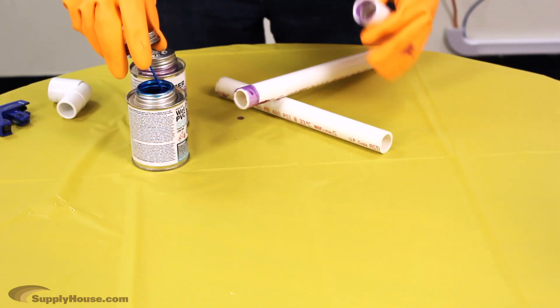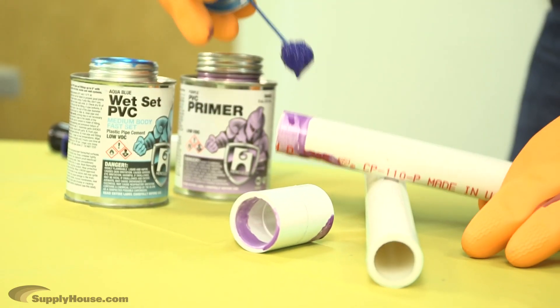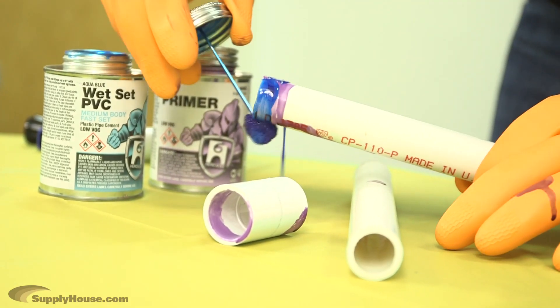The next step is to apply the PVC cement. Make sure to glue about an inch of the pipe and inside the joint.